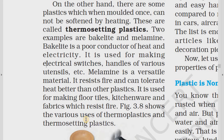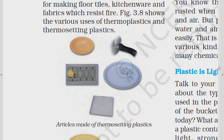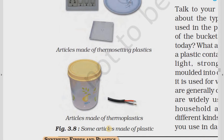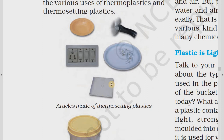To summarize: thermoplastics include polyethylene and PVC, which are used for making plastic bags and other common items. Ethylene is the monomer of polyethylene. For thermosetting plastics, the two types are bakelite and melamine. Bakelite is a poor conductor of heat and electricity, so it is used for making electrical switches. Melamine is fire-resistant and is used for floor tiles, kitchenware, and fabrics that resist fire.